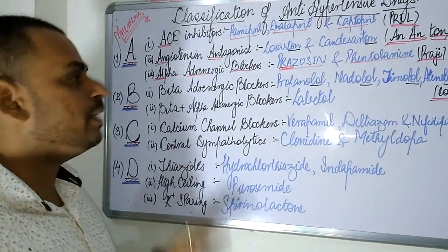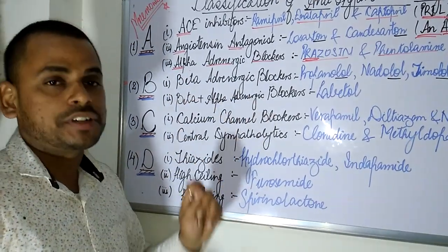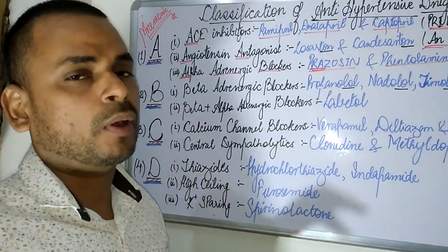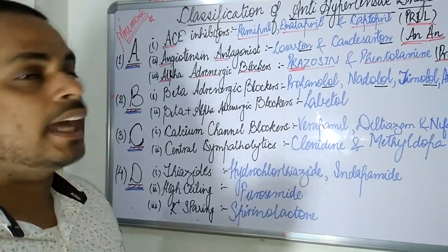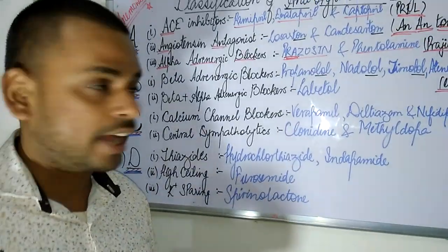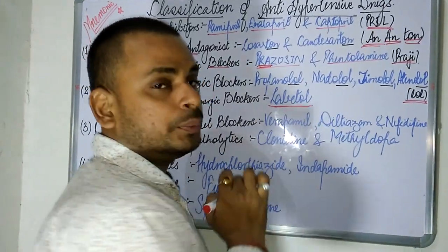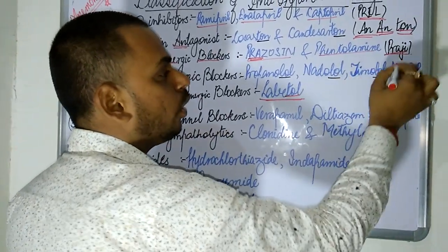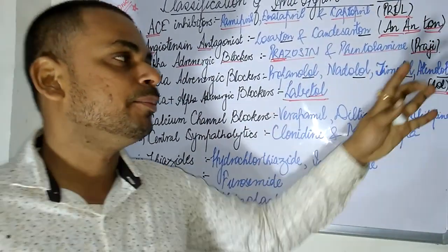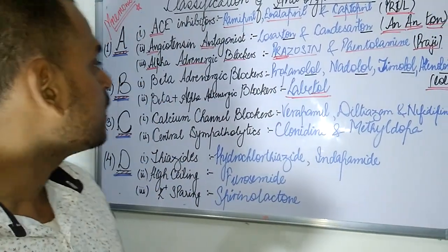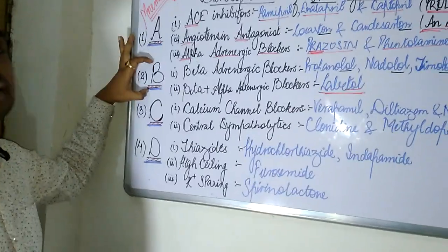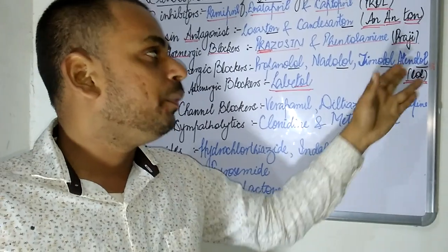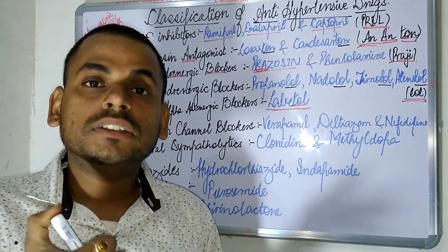The next B covers the alpha plus beta adrenergic blockers. Under this class, the famous example is Labetalol. So all drugs under the B alphabet — whether Propranolol, Nadolol, Timolol, Atenolol, or Labetalol — are all ending with the suffix LOL. Remember: the B alphabet refers to all drugs whose suffix ends with LOL.